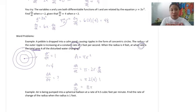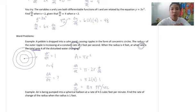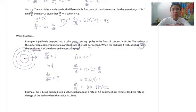We plug everything in: r was 4 and dr/dt was 1. So dA/dt equals 8 pi. For units of measurement, we're talking about area growing over time — normally area is in feet squared, and we're also doing this in relation to time, so the answer is 8 pi feet squared per second.